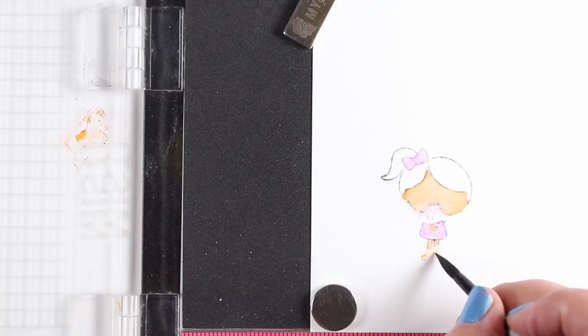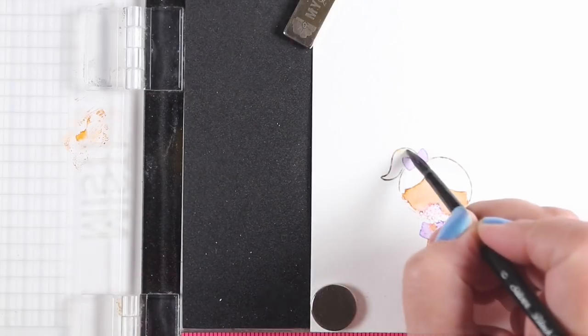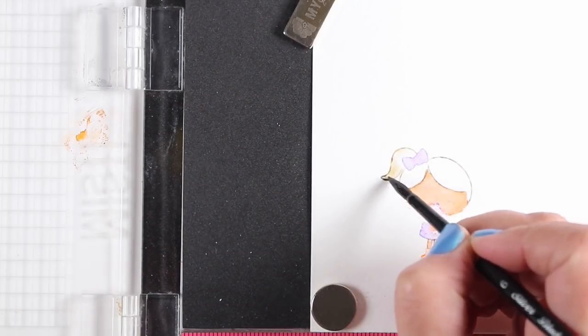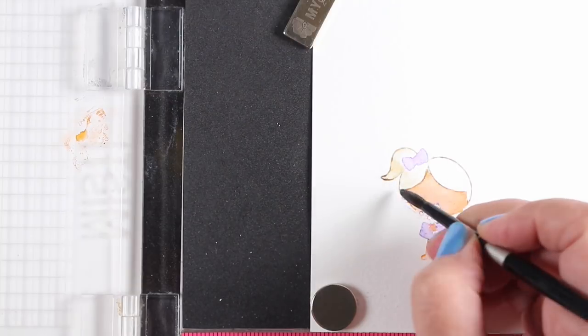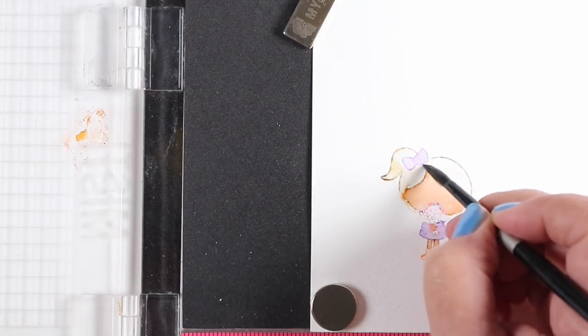You can also use a heat gun to dry things up a little bit. But heat guns tend to get the paper all kind of curly and bowed, so I tend to not use it unless I totally need to hurry on getting something done.